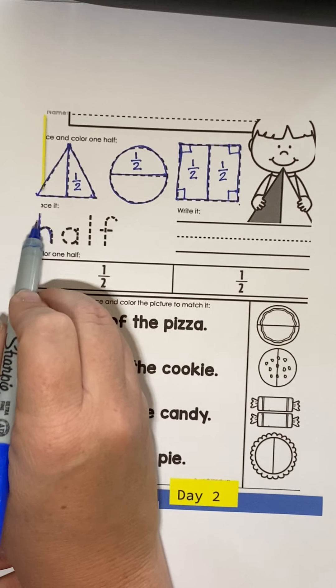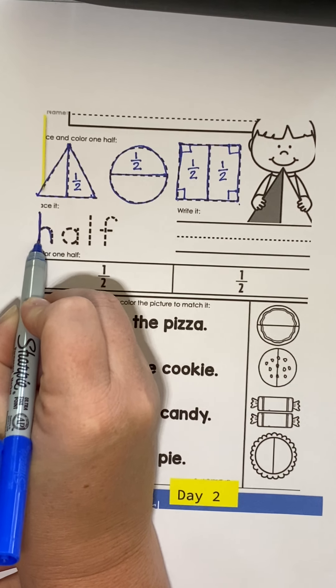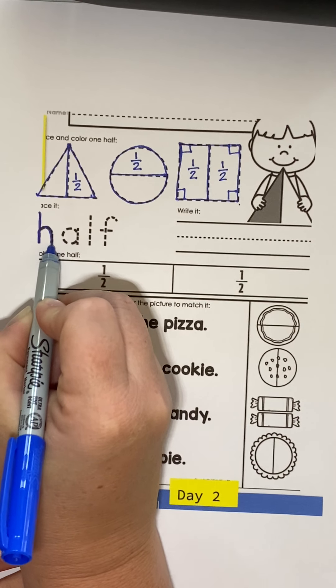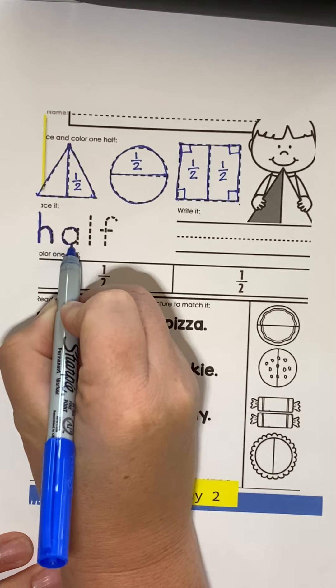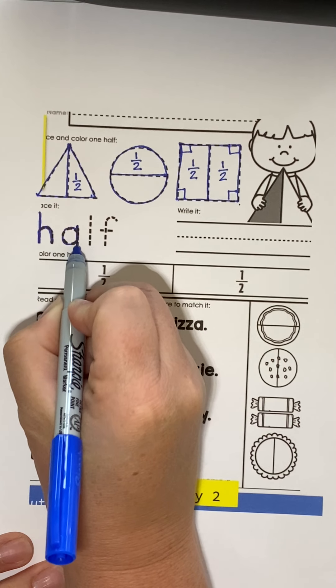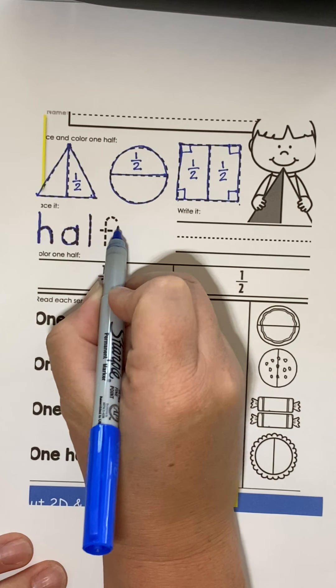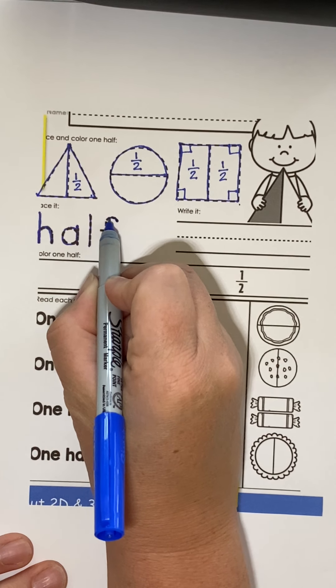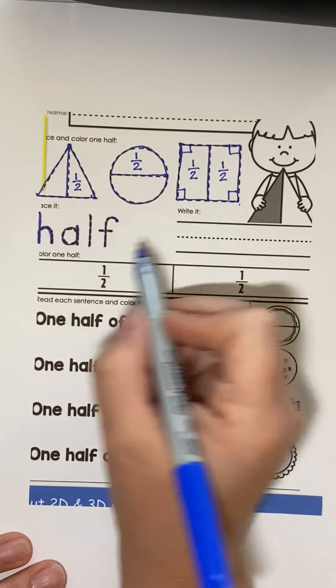Now we're going to write it. We're going to trace the word half, starting at the hat line. Big line down, back over. When we make our A, there's a C in the letter A. A, L, F. Starting at the top, curve, and straight line down, little line across. Half.